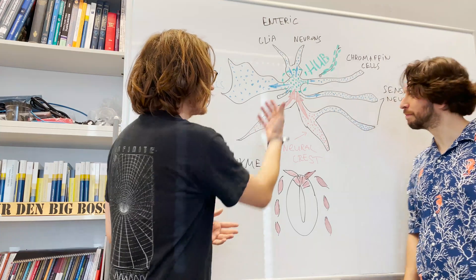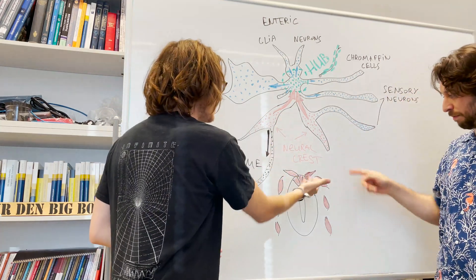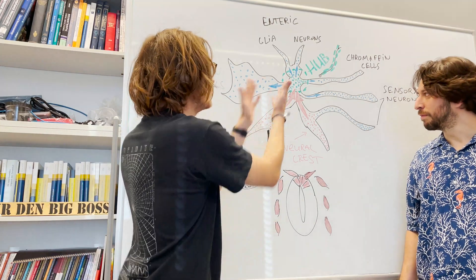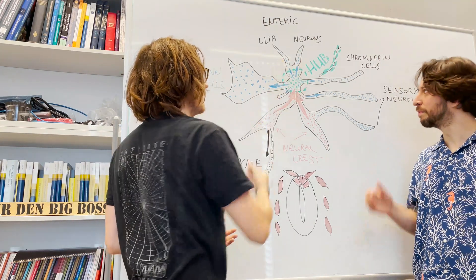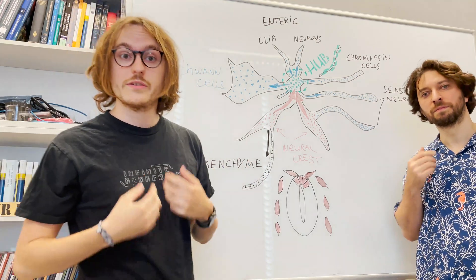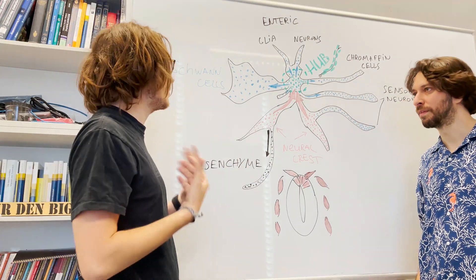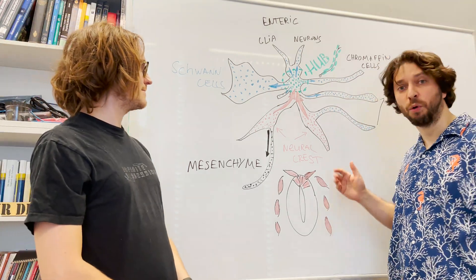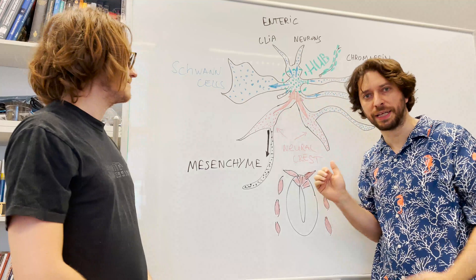This tree is composed of the neural crest cells that you can see in red. What you can see also is that the neural crest cells converge into a common transcriptional state, and we call this the hub state.